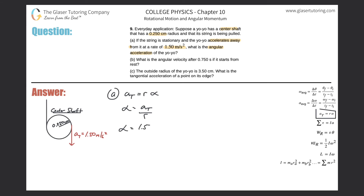Plugging in the values: 1.50 divided by 0.25 centimeters — but be careful, you have to convert that to meters, so 0.0025 meters. 1.5 divided by 0.0025 gives us 600. So the angular acceleration is 600 radians per second squared.